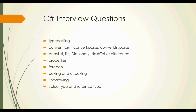Boxing and unboxing — where we need to use them and why. Shadowing — what is shadowing. Value type and reference type. Ternary operator — whenever you want to avoid if-else cases, you can use the ternary operator in a single line. Learn the description and implement a simple program.